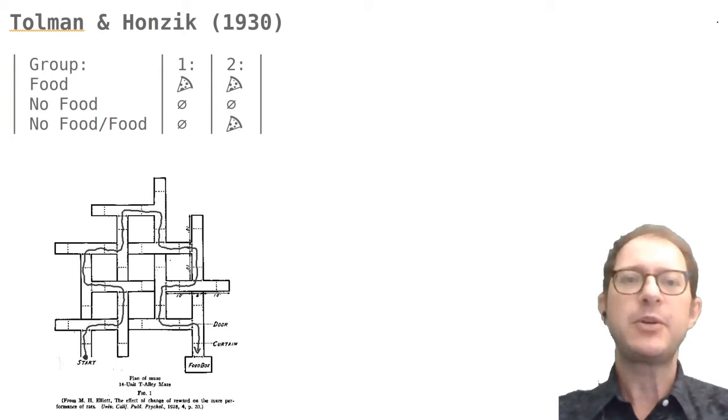Let's see now one experiment that Tolman and his co-worker Honzik used to argue for cognitive maps in rats, and how that experiment can also be interpreted differently. Tolman and Honzik put together a complex maze of 14 elementary mazes, as you can see in the image.